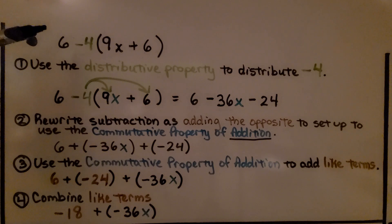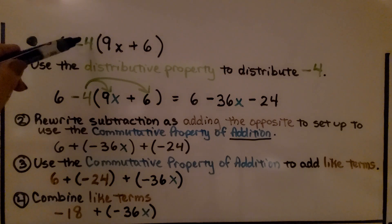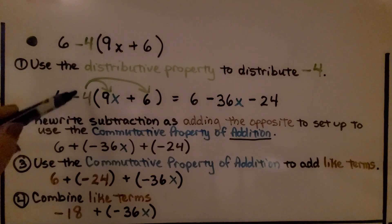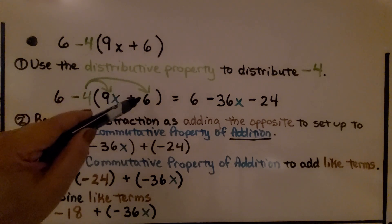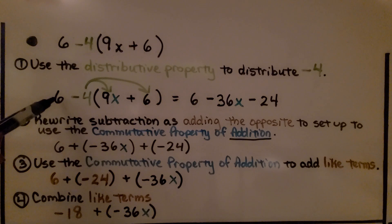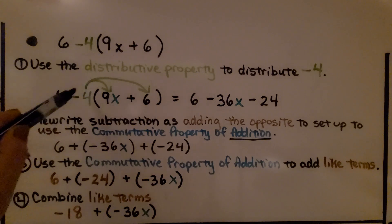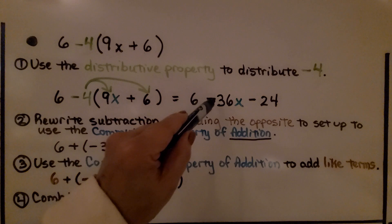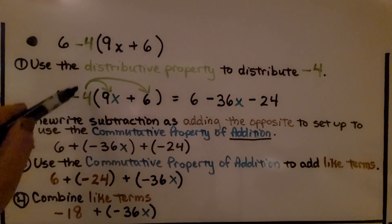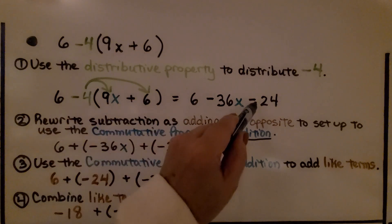To simplify this algebraic expression, we start by using the distributive property to distribute the negative 4. We distribute it to the 9x within the parentheses and to the positive 6 within the parentheses. We have a positive 9 and a negative 4, so that gives us a negative 36x, and we get a negative 24.